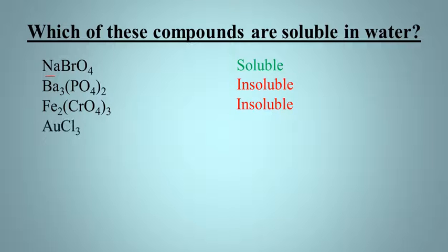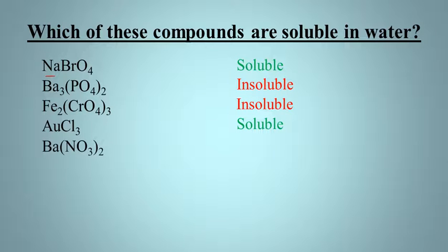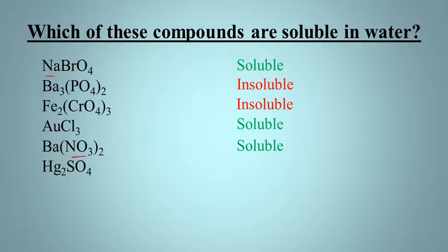Gold-3 chloride — what do we say about chlorides? With only three exceptions, and this isn't one of them, chlorides are soluble, so this is going to dissolve in water. Barium nitrate — if you see that nitrate on the end, that was the very first rule: all nitrates are soluble. Mercury-1 sulfate — generally speaking sulfates are soluble, but there are six exceptions, and this was one of those six, so this is actually insoluble.